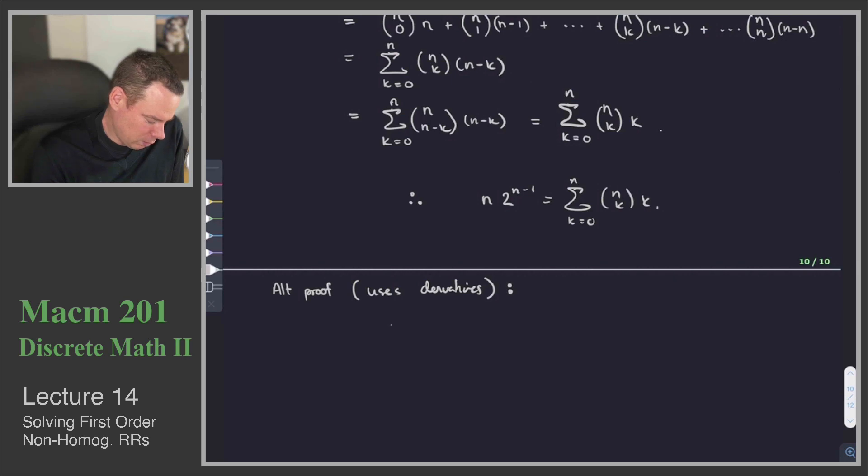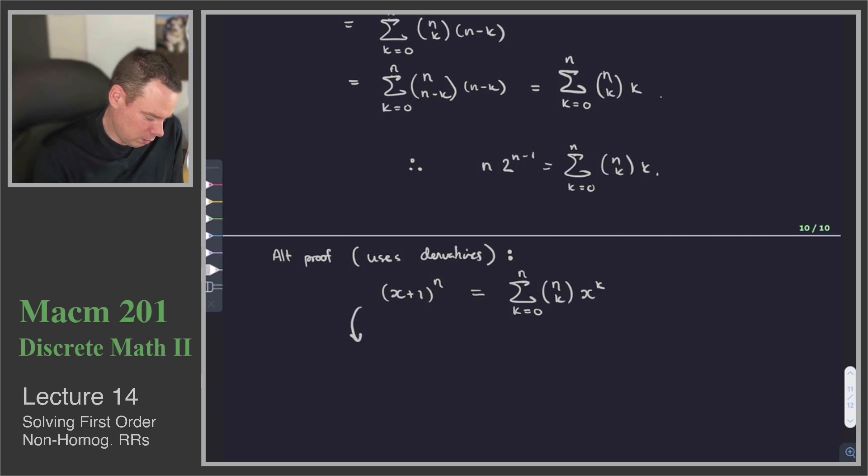What do we start with? I'm going to start with x plus 1 to the n. By the binomial theorem we know that this is the sum of n choose k x to the k where k goes from 0 to n. And now we'll just differentiate this. On the left hand side we'll use the power rule.